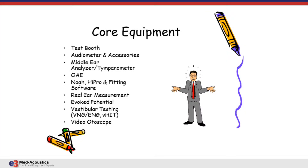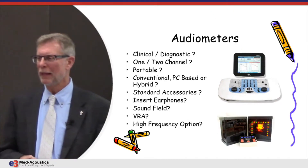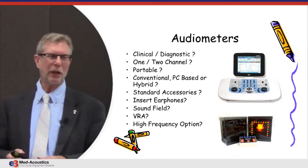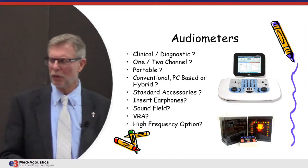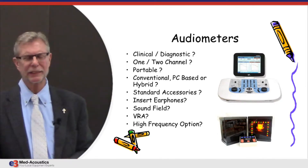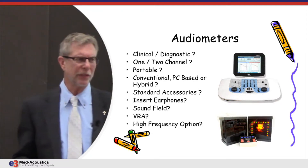We'll go on to the next thing in our list of core equipment, and that would be the audiometer. There are a lot of things to think about with an audiometer — it's the most basic piece of audiological instrumentation. The first question might be: is it going to be clinical or diagnostic, one channel or two channel?